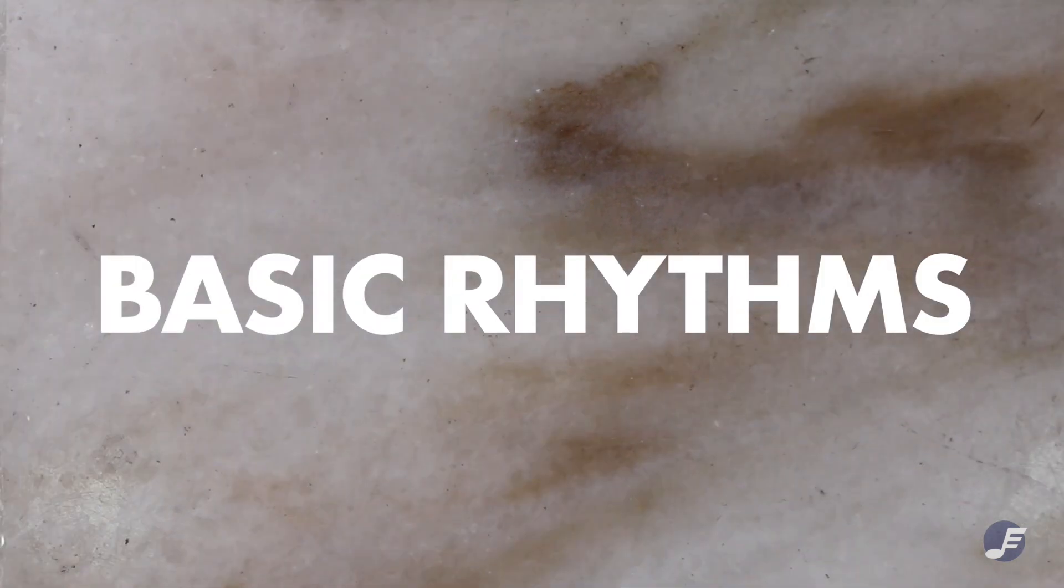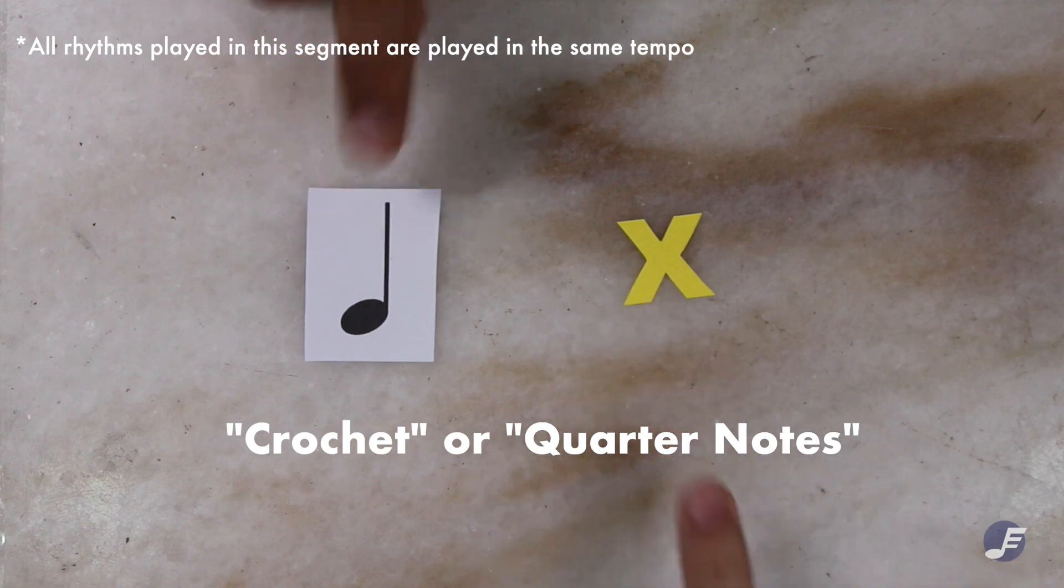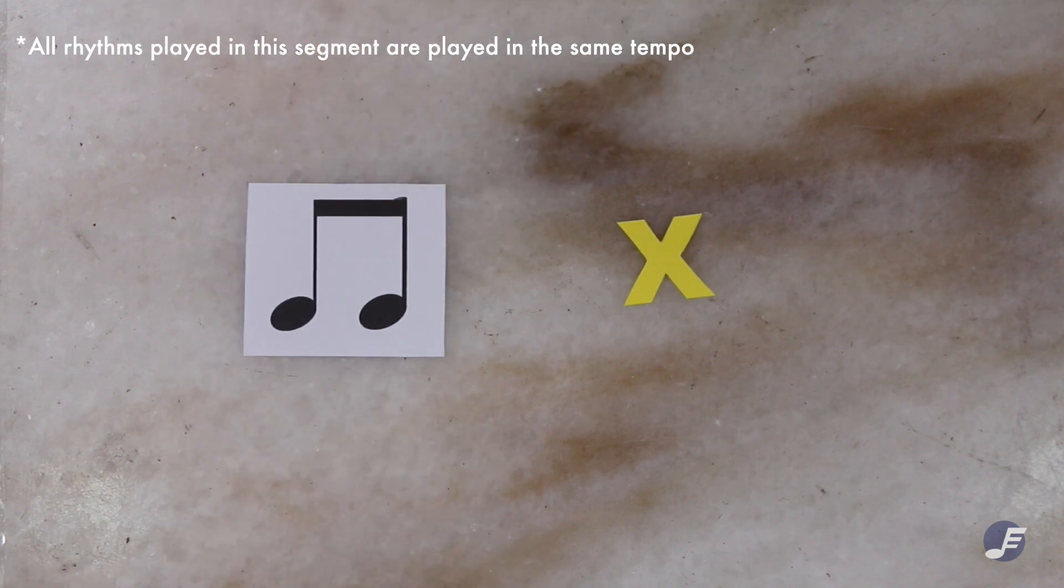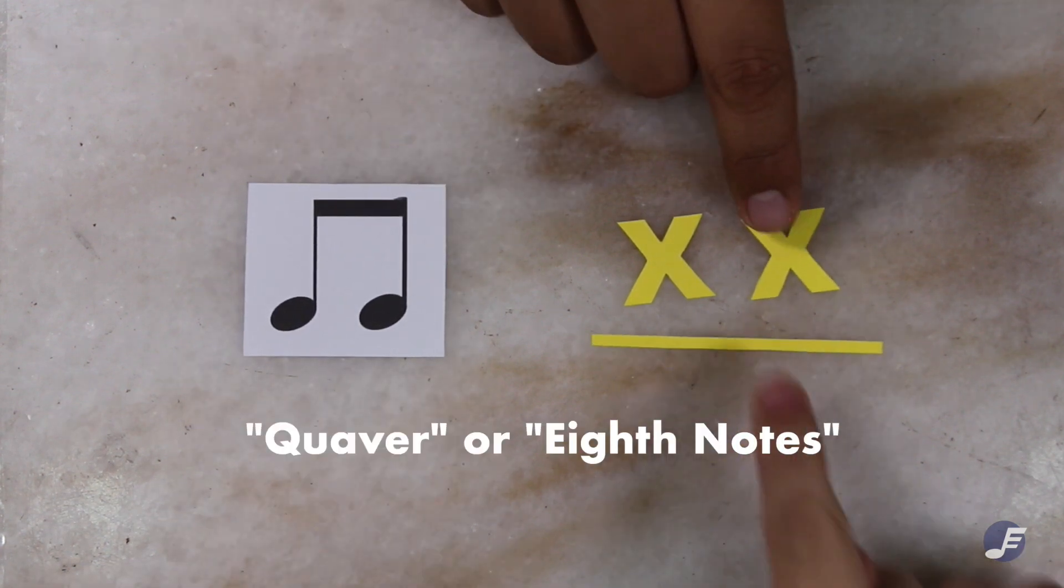Now, let's talk about basic rhythms. In the jianpu score, crotchets are represented this way. One black note is one number. If you halve the value of the crotchet, you get a quaver, represented like this.